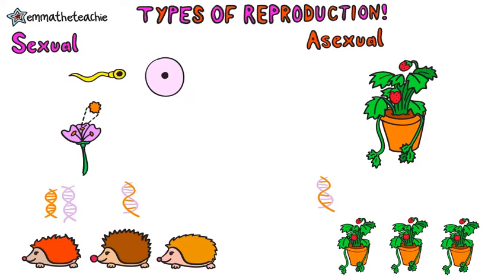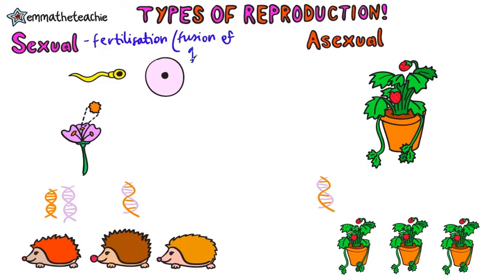There are two types of reproduction: sexual and asexual. Let's start with sexual. This involves fertilization, which is the fusion of the male and female gametes.